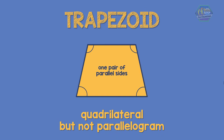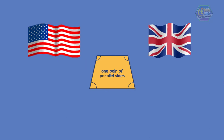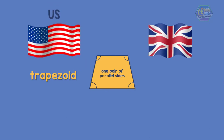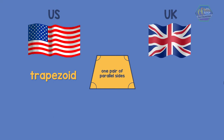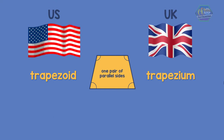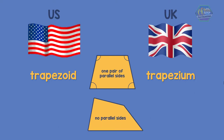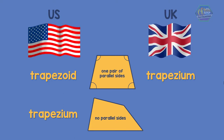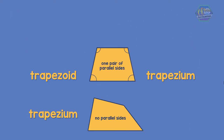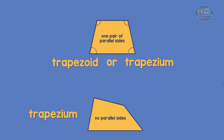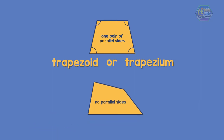The name for this shape can be quite complicated. In the US they call it a trapezoid, while in the UK they call it a trapezium. But here's the twist: in the US, a quadrilateral that has no parallel sides is called a trapezium. So let's not complicate our life — let's just use the name trapezoid or trapezium for describing a quadrilateral that has one pair of parallel sides, and for a quadrilateral with no parallel sides, let's simply call it a quadrilateral. We don't need to put a special name on it.